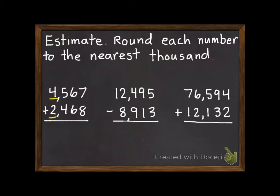Okay, the first practice problem. I don't have room to show all my work on this one, but the first number is going to change to 5,000. The second number is going to stay at 2,000. So 5,000 plus 2,000 is 7,000.